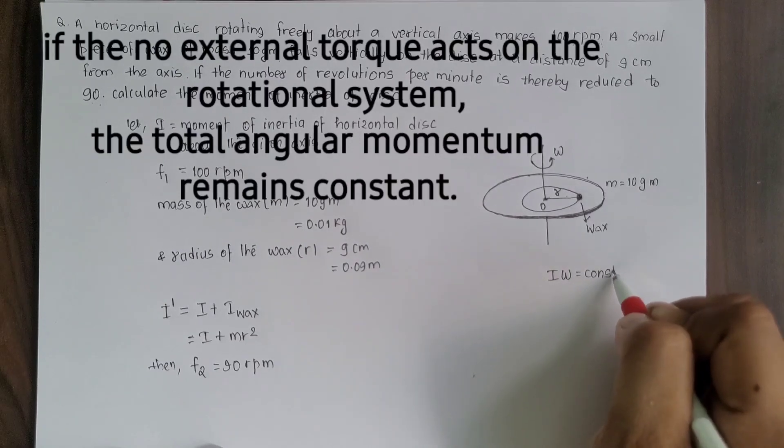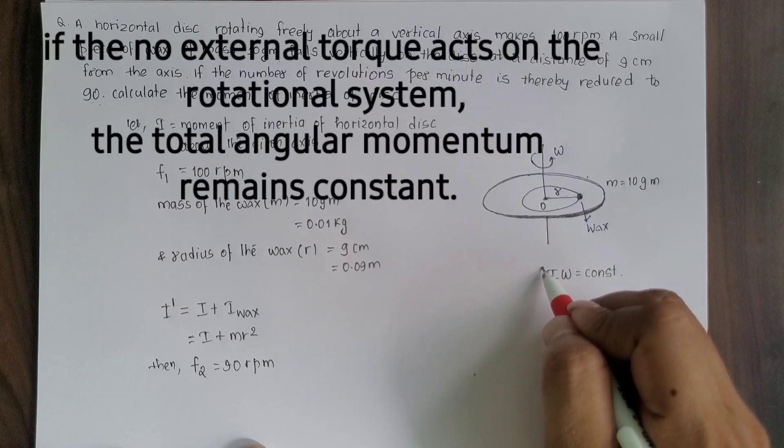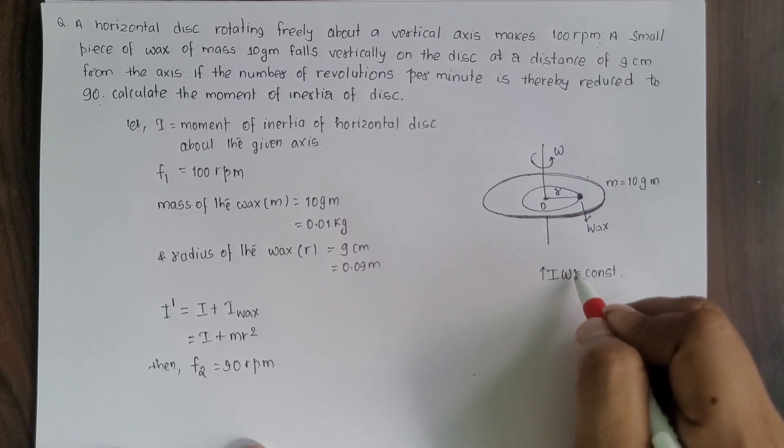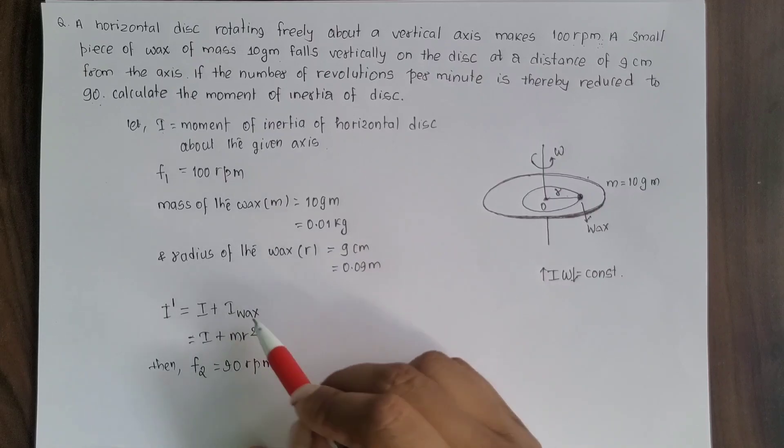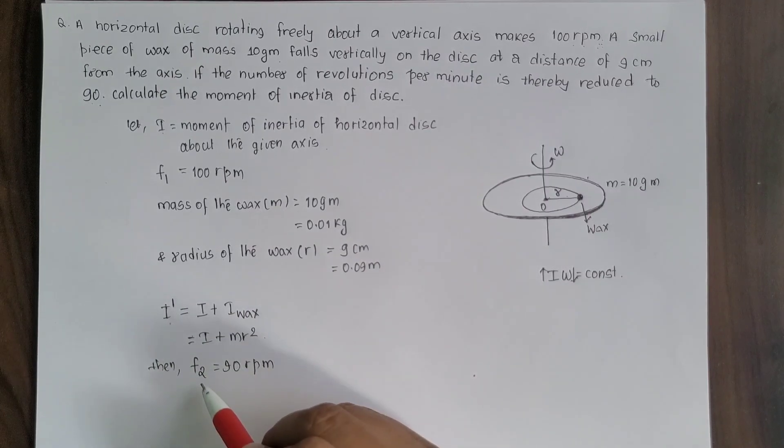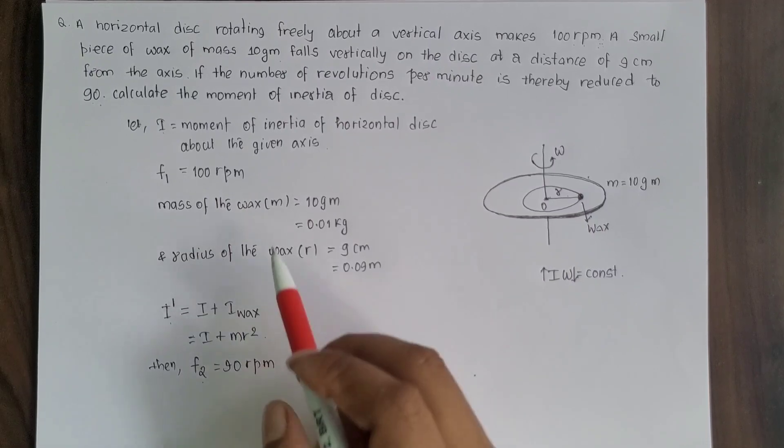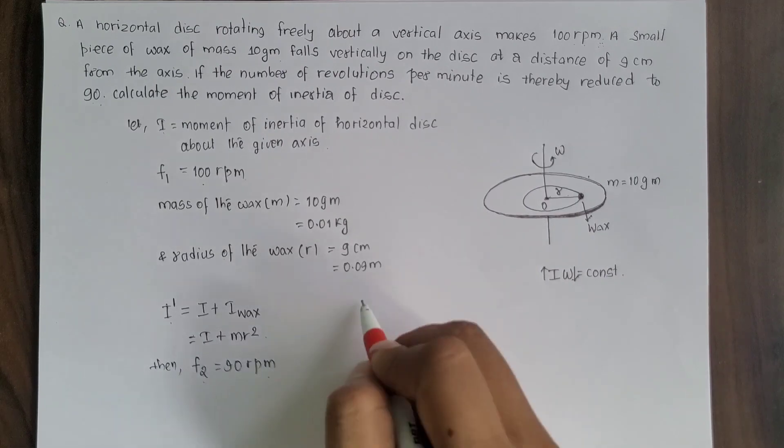Principle of conservation of angular momentum. When moment of inertia increases, angular velocity reduces. After putting the wax on there, moment of inertia increased, so the revolution rate or angular velocity decreased from 100 revolutions per minute to 90 revolutions per minute.